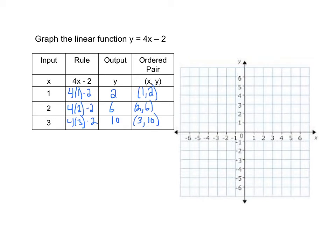So now we have the ordered pair 1, 2, 2, 6. And then 3, 10, we kind of envision where those are off of our graph. We'll be up here. And then once again, we notice that they form a line.